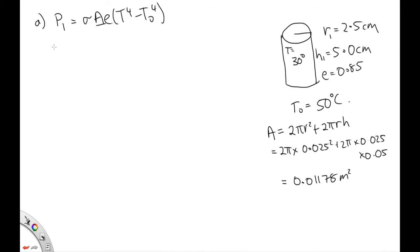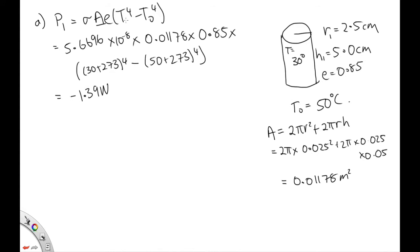OK, now we can substitute everything in here. Sigma, Stefan's constant, 5.6696 times 10 to the minus 8 times the surface area, we've calculated down here, 0.01178 times the emissivity, 0.85 times T to the 4. So that's the 30 plus 273 to the 4 minus the temperature of the surrounding, so 50 plus 273 to the 4. Solving that on the calculator, we end up with minus 1.39 watts. So this minus is just because T to the 4 is lower than T0 to the 4. So we should put 1.39 watts transferred to the cylinder.